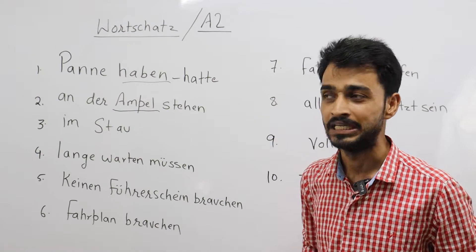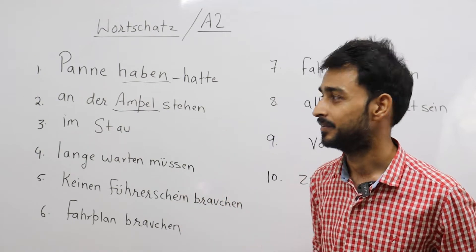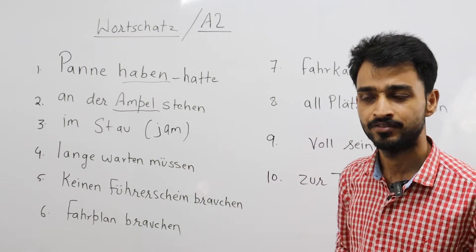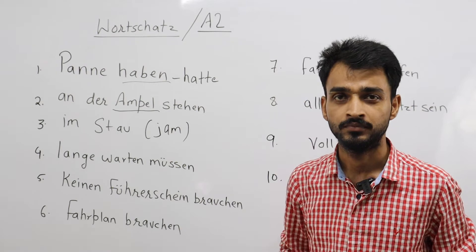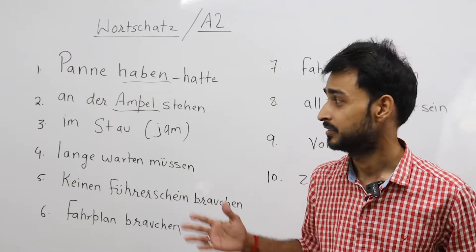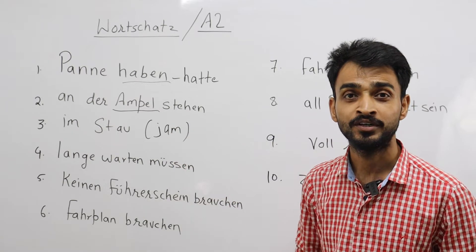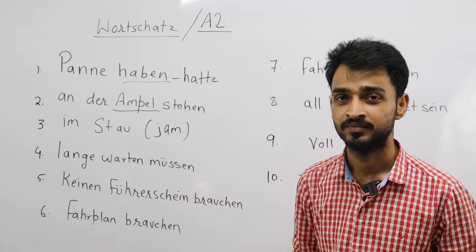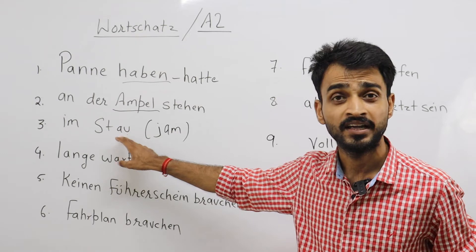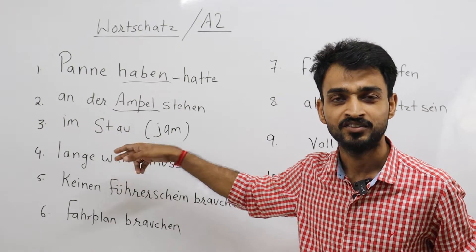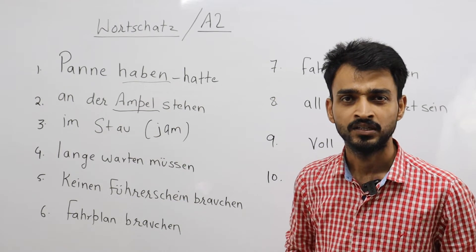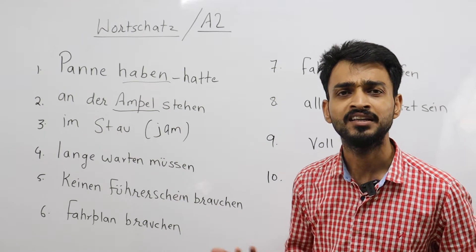'Ich fahre mit der U-Bahn, ich fahre mit der Bahn.' And now: Stau - traffic jam. Nobody likes traffic jam. Another reason you can give for why you want to use public transport, especially train: 'Ich möchte mit der U-Bahn fahren, okay? Es gibt keinen Stau. Der Stau - es gibt keinen Stau.' There is no traffic jam when you travel by metro or by train - except in a few situations, there is hardly any traffic jam.